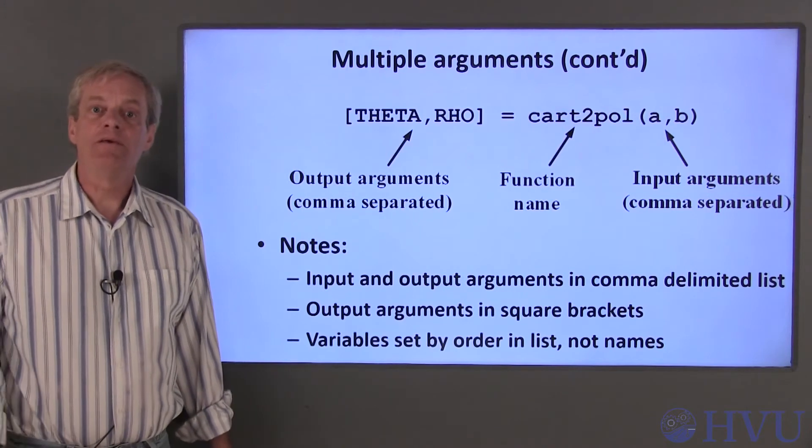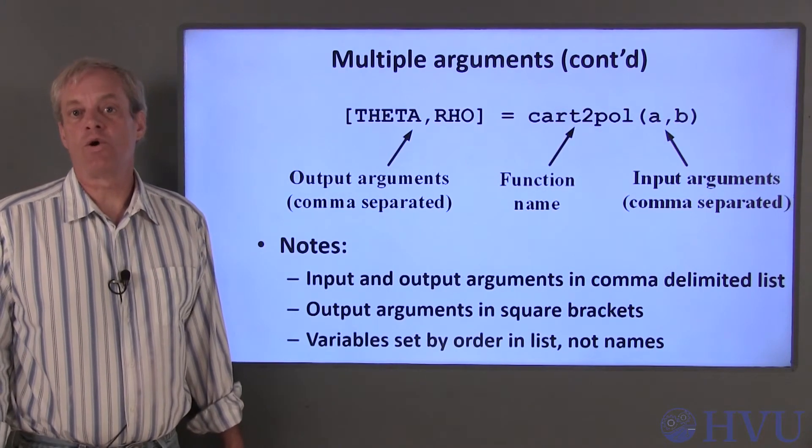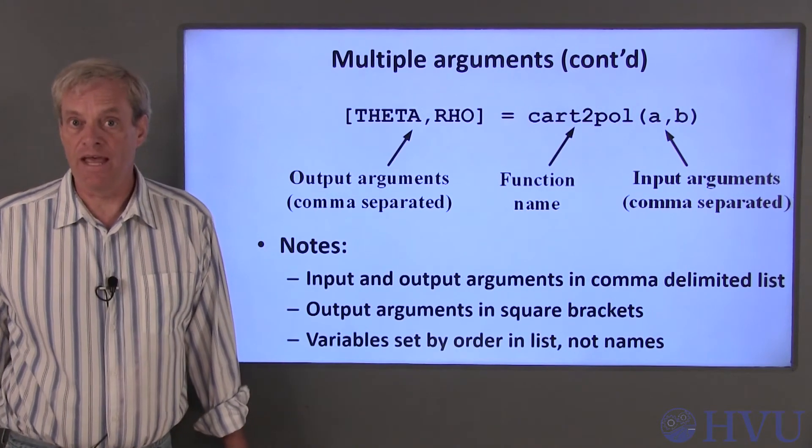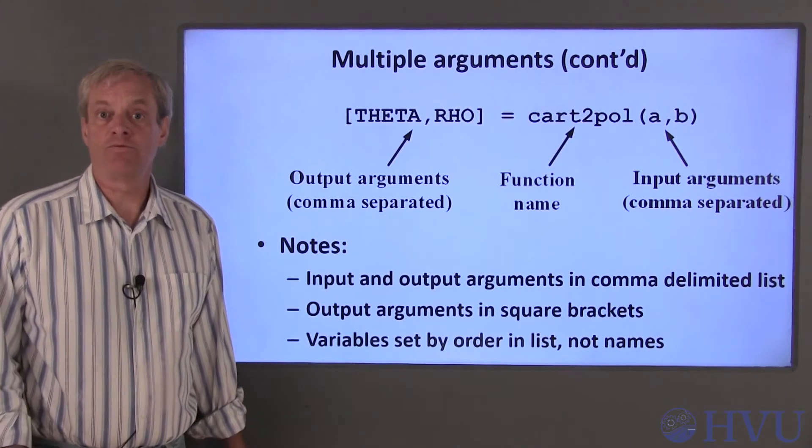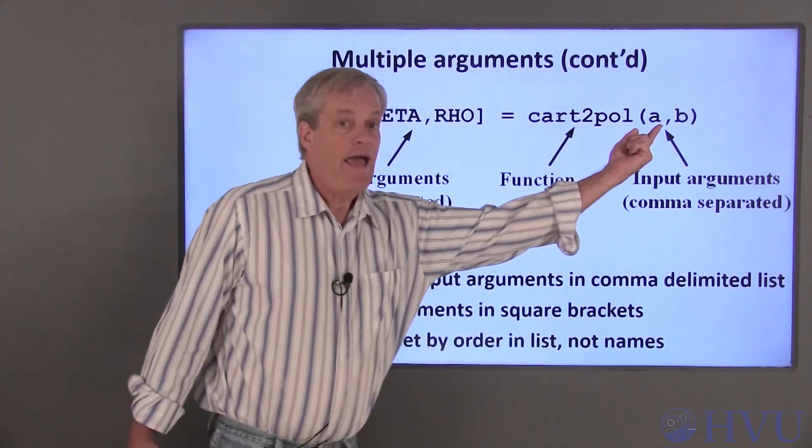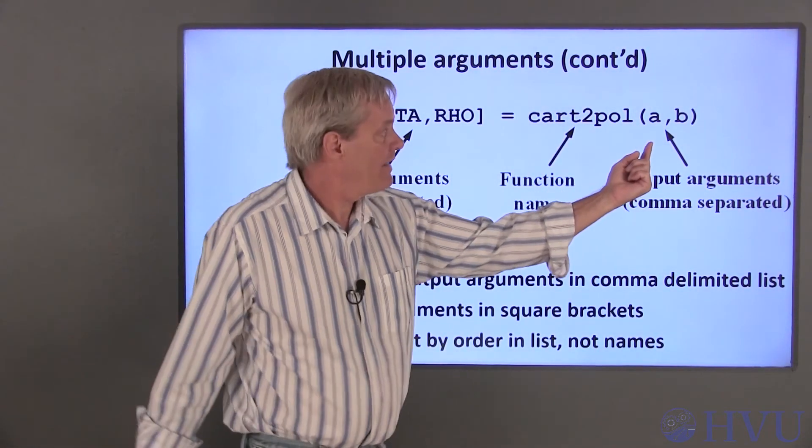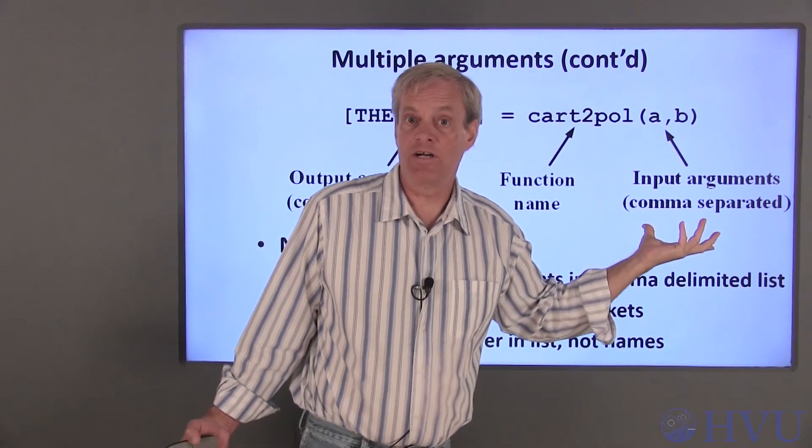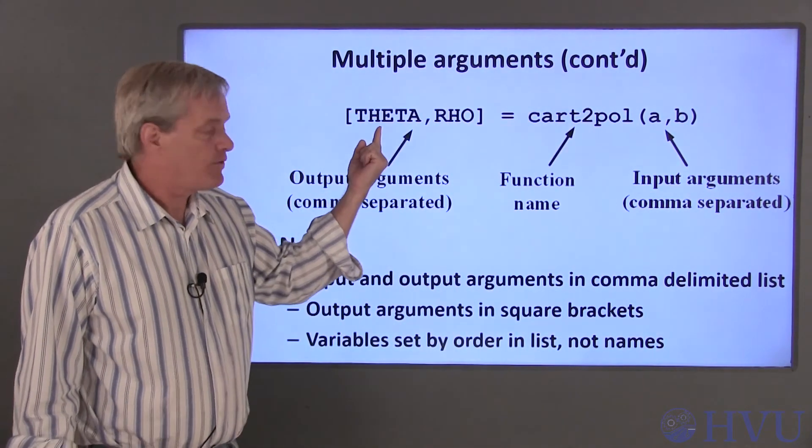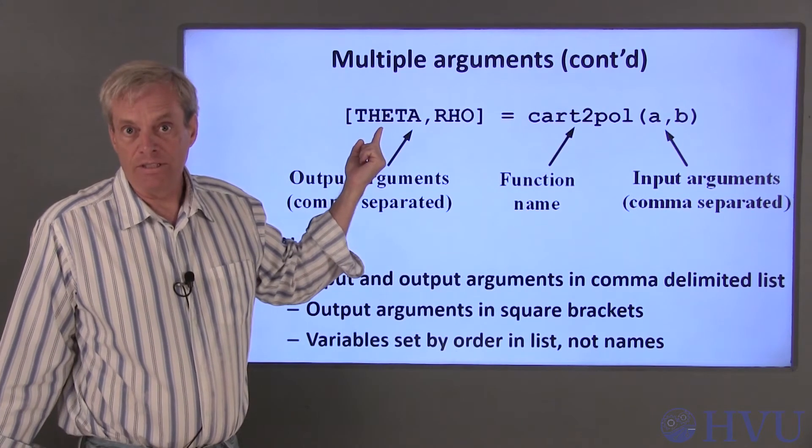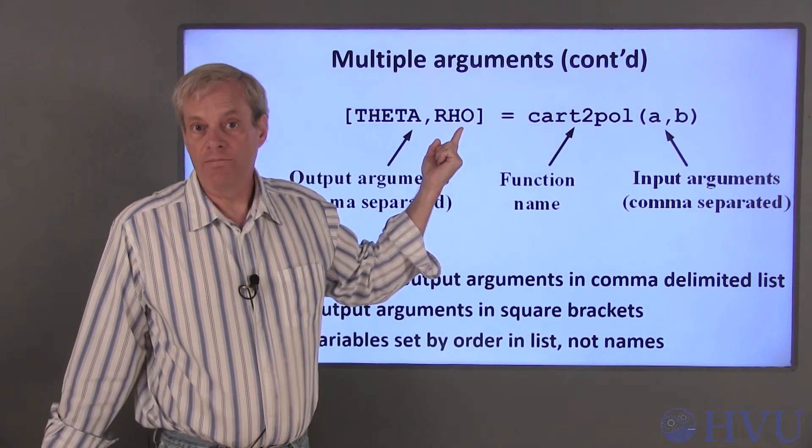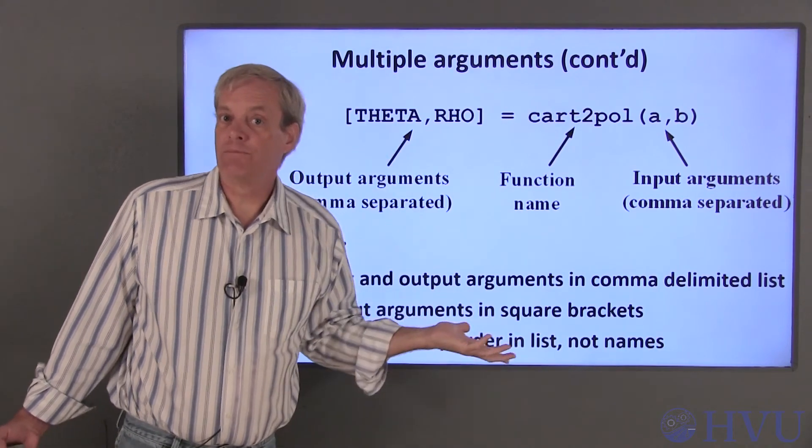Importantly, keep in mind that the arguments are set according to their order in the list regardless of their variable names. The first argument in the input argument list will be interpreted by the function as the x-axis coordinate and the second as the y-axis coordinate, regardless of the name of the variables. Likewise, the first argument in the output argument list is the angular position and the second argument is the radial position, no matter what the variable names are.